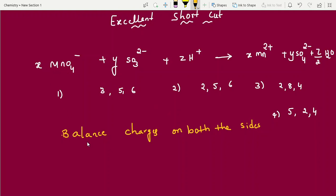See here, this is X, right? X into minus 1. Here what is the charge minus? That means 1. Plus Y into minus 2. Plus Z into plus 1. That is equal to X into plus 2, plus Y into minus 2. This is a neutral compound. You don't need to take any charge. Only charges we are balancing here. This is 0.